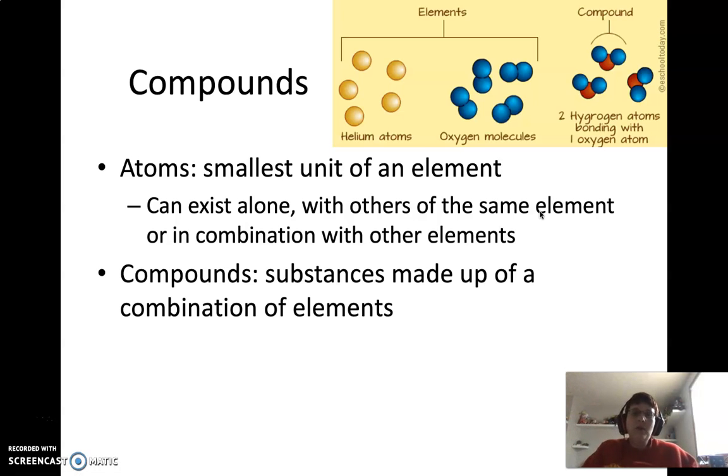So if we have them in combination with other elements, we call that a compound. I mentioned that when I was talking about water. So compounds are just substances made up of a combination of elements. So if you have two or more elements bound together, that makes a compound. So water, carbon dioxide, sugar. Most of the materials that you see every day and talk about every day are going to be compounds, because they are made up of these combinations of elements.